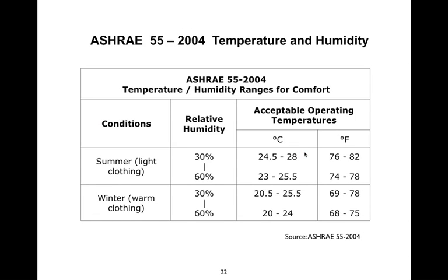For comfort, ASHRAE says summer and winter you want a humidity range of 30 to 60 percent — you don't want the air too dry. They have two different temperature ranges for summer and winter that most people will find comfortable, ranging from 68 up to the high 70s depending on the time of year. Wintertime has a lower acceptable range because people generally wear more clothes in winter.